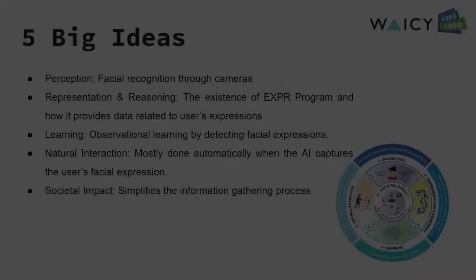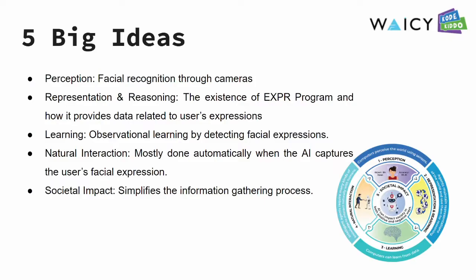Here are the five big ideas. First, the perception is by facial recognition through cameras. The representation and reasoning is the existence of the EXPR program and how it provides data related to the user's expressions. The learning process is observational learning by detecting facial expressions. The natural human-AI interaction is mostly done automatically when the AI captures the user's facial expressions. And the social impact is that it simplifies the information gathering process, especially related to expressions.